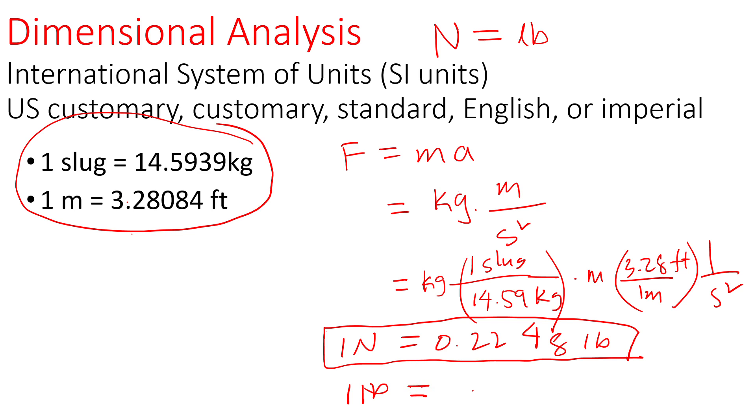We can just switch this to pound to Newton like this. So one pound would be, if you just divide that, it's going to be 4.45 Newtons.